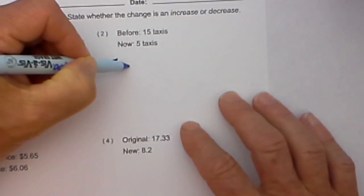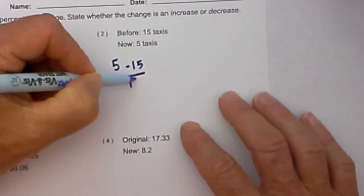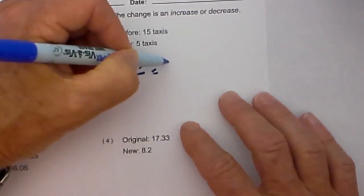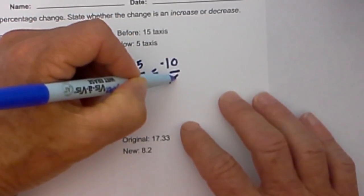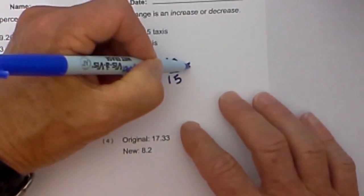5 minus 15, the difference is negative 10 over 15. And 10 divided by 15 equals negative 0.67.